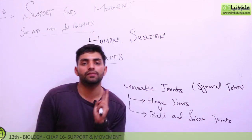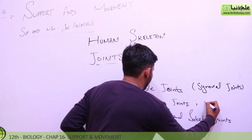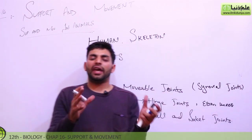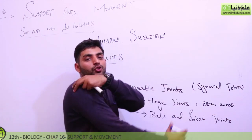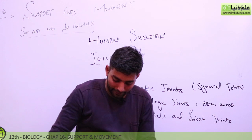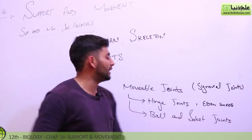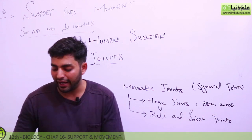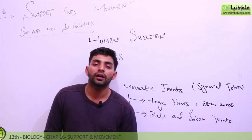Hinge joints have two dimensions of movement — like the elbow, and we can also talk about the knee. Ball and socket joints have more than a single dimension of movement, like our shoulder joint. The head of the humerus fits into the pelvic socket, which is also a ball and socket joint, because you have more than one dimension of movement. This gives us much more flexibility.